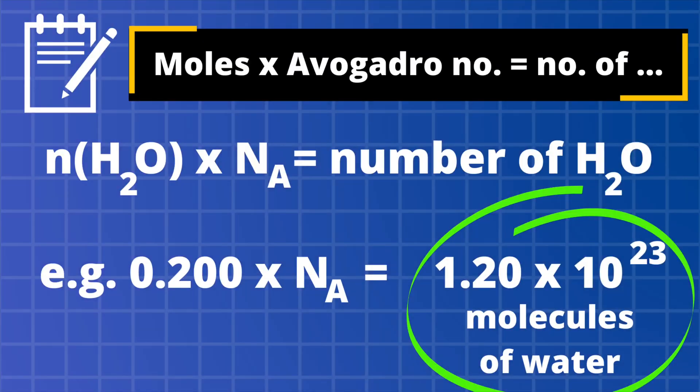Here's an example of that calculation in action using water. If I had 0.200 mol of water in a sample and multiplied this by the Avogadro constant — often given the symbol N subscript A — I would get the number of H₂O molecules present. So 0.200 × 6.02 × 10²³ gives me 1.20 × 10²³ molecules of water.